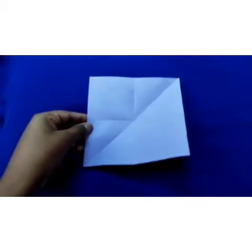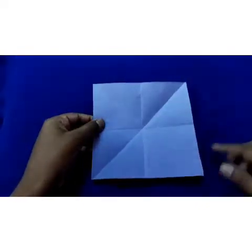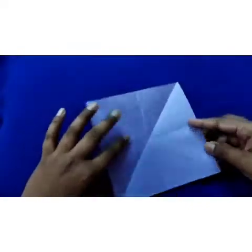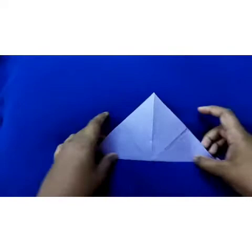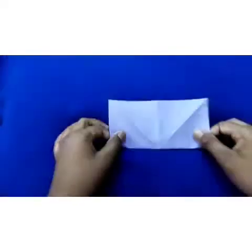The first step to fold our fish is to fold diagonally from all the sides, then fold it in half.